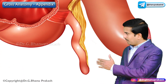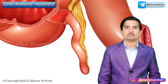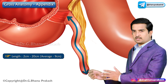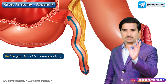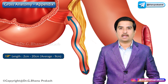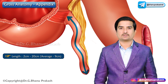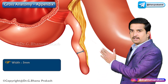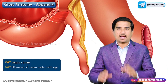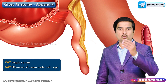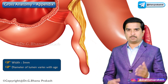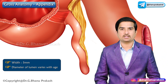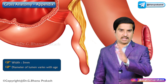Now let us talk about the dimensions of the appendix. The length of the appendix is approximately 2 to 20 centimeters, but the average is 9 centimeters. The length varies with age and it is longer in children than in adults. The width is 5 mm, and the diameter also varies with age — it is greater in children than adults and is often obliterated after mid-adult life.